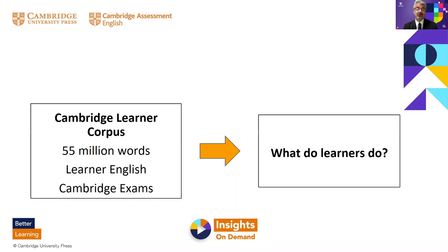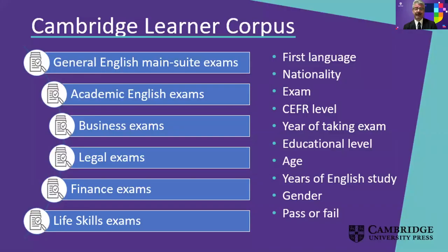The Cambridge Learner Corpus is the world's largest collection of texts written by people learning English. It is made up of students' responses to the writing sections of Cambridge English exams. The project has been running for about 20 years and new texts are added every day. It tells us what learners can do at each stage of their learning journey. The corpus includes a wide range of texts — both general English and more specialised academic, business, legal, finance and life skills texts.